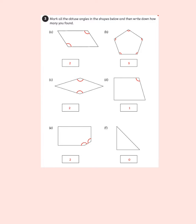Question three asked you to mark all the obtuse angles in the shapes below, just like we did for acute angles, and then write down how many you found. Shape A had two obtuse angles. Shape B had five obtuse angles — that's a pentagon, and all of those angles are bigger than right angles. C had two obtuse angles. D had one obtuse angle. E had two obtuse angles — quite tricky to spot as they were small in the picture. And F had zero obtuse angles.